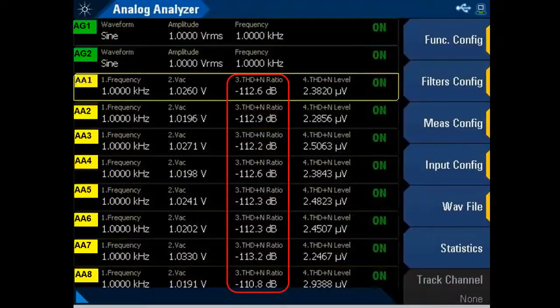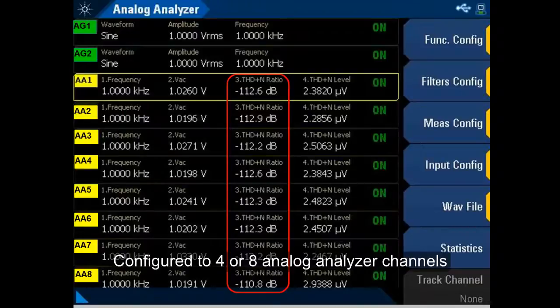Now, let's take a more in-depth look at these features. The U8903B Audio Analyzer can be configured to 4 or 8 analog analyzer channels.